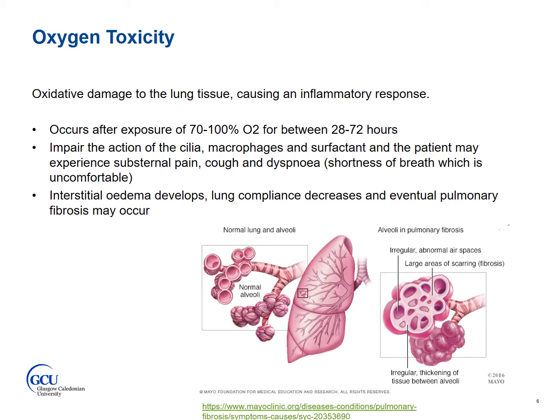Oxygen toxicity: if a patient receives high concentrations of oxygen — that is, greater than 70% — for more than 28 hours, the patient is at risk of oxidative stress to the lung tissue. This can cause an inflammatory response which, in turn, impairs the action of the cilia, macrophages and surfactants within the lungs.